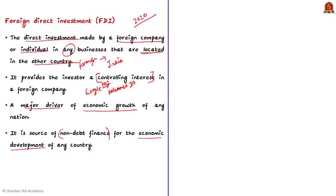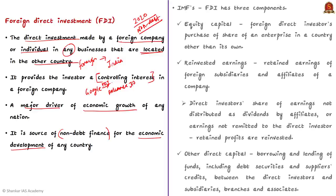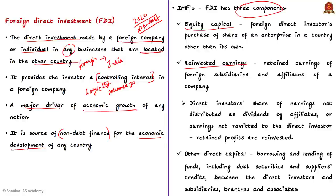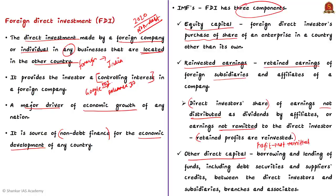According to the IMF's definition, FDI has three components: equity capital, reinvested earnings, and other direct capital. Equity capital is the foreign investor's purchase of shares in an enterprise in a foreign country. Reinvested earnings are the retained earnings of foreign subsidiaries and affiliates — earnings not distributed as dividends or not remitted to the direct investor, which are reinvested. For example, if Google invests in Jio Platforms and after one year gets profits but does not take the money back to America, instead reinvesting it in Jio — that is reinvested earnings.